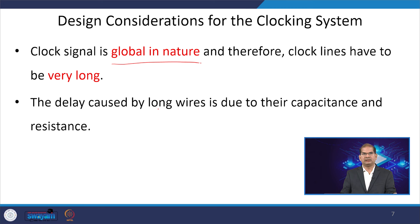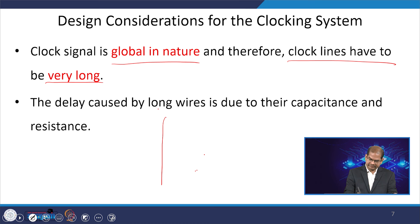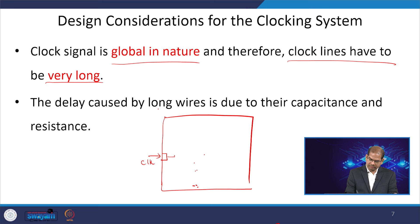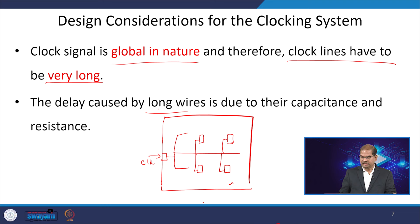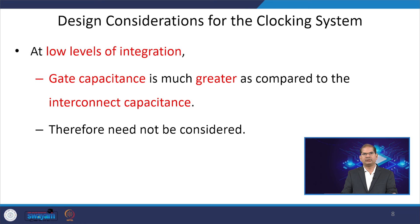The clock signal is a global net, and this clock line is usually very long. If you have a big chip with a clock pin, it has to route to all the flip-flops inside the chip — branches going to flip-flops at various locations. The clock net is very long in nature because it is going to all the flip-flops inside the chip. The delay caused by this long wire is due to the capacitance and resistance of that interconnect.